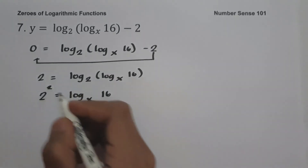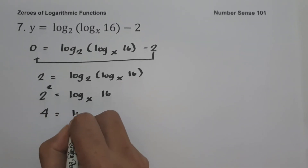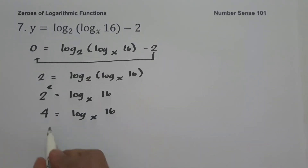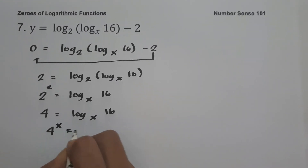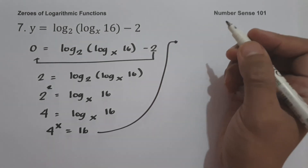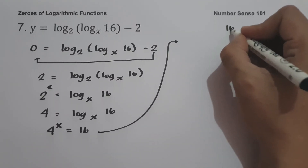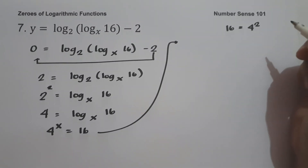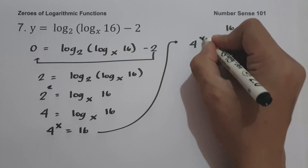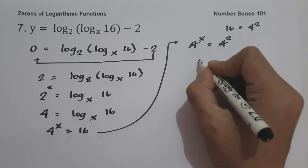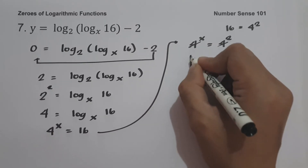So we have 4 equals log base x of 16. Converting again into exponential form: x raised to 4 equals 16. To find the value of x, we must have the same base. We write 16 as 4 squared, since 4 multiplied by itself twice gives 16. So we have x raised to 4 equals 4 raised to 2, meaning x raised to 4 equals 4 squared. Cancelling the base, the value of x is 2, and this is the zero of the given function.